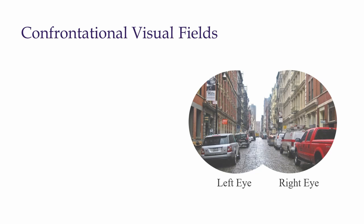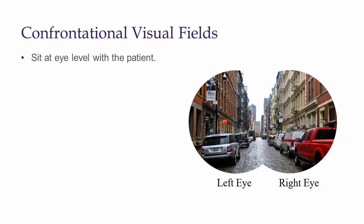After testing visual acuity, we will check confrontational fields. To perform confrontational field testing, begin by sitting at eye level with the patient at approximately arm's length. Have them focus on your eyes or nose. We test one eye at a time. You can close your eye that is not in line with the eye you are testing so that you can appreciate what the patient is seeing.